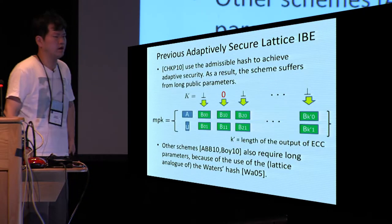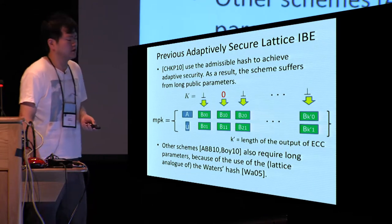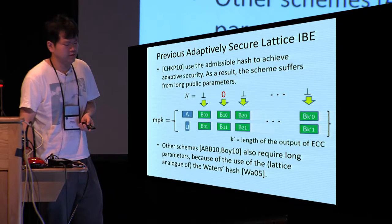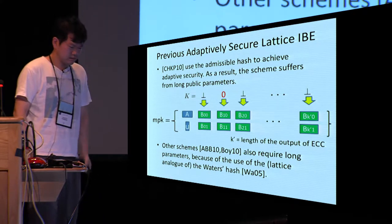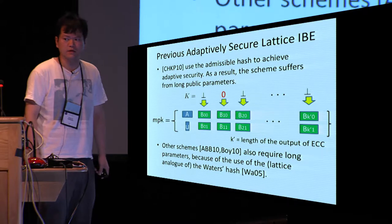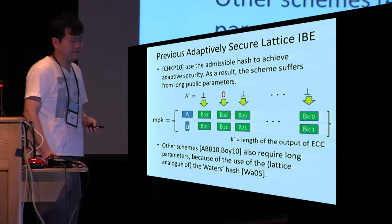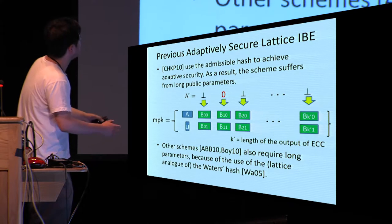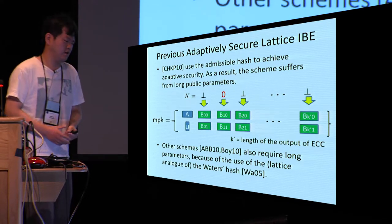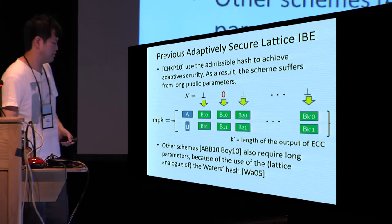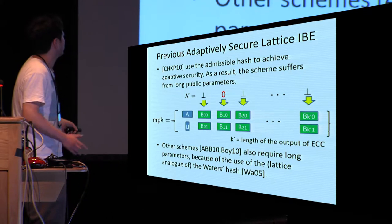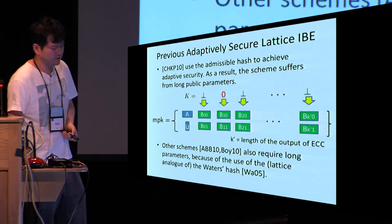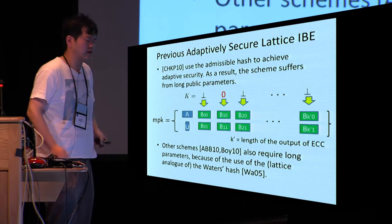Next, I explain previous adaptively-secure lattice IBE schemes. The CHKP scheme (Cash et al.) used the admissible hash function to achieve adaptive security. As a result, the scheme suffers from long public parameters because each component of the secret randomness K is embedded into the matrices in the master public key in a component-wise manner. Since the length of K is very long, this leads to a scheme with a long master public key. Other schemes also require long public parameters due to use of a lattice analog of Waters' hash.